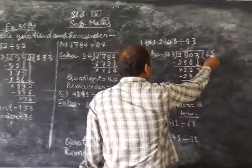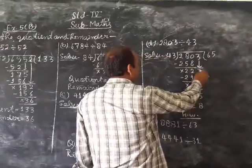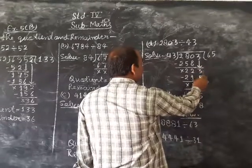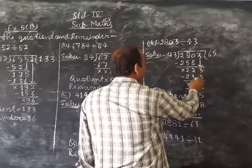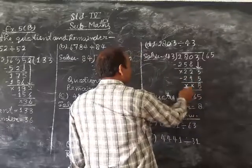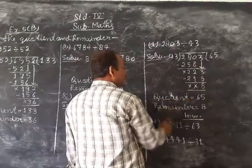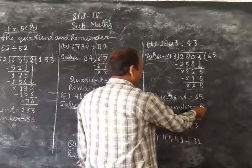So 43, 258. 5 bar, 13 minus 5, 8. 1 minus 1, 0. 2 minus 2, 0. So quotient equal to 65 and remainder equal to 8.